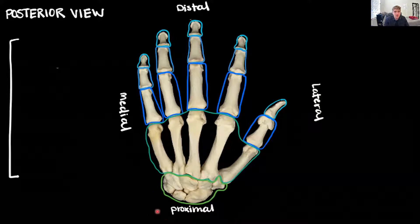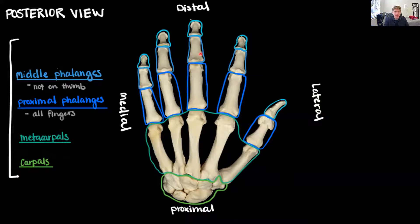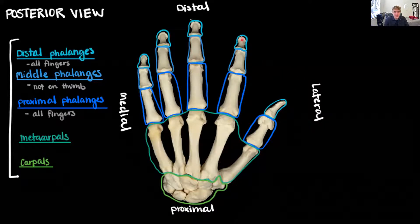Now let's talk about these different regions going proximal to distal. The first region is going to be the carpals or carpal bones. Distal to the carpals are the metacarpals. Distal to the metacarpals we have the phalanges, in three sets: the proximal phalanges in dark blue, present on all five digits; the middle or intermediate phalanges — notice the thumb does not have one; and finally the distal phalanges in turquoise, which are the tips of our fingers. All five fingers have a distal phalange.